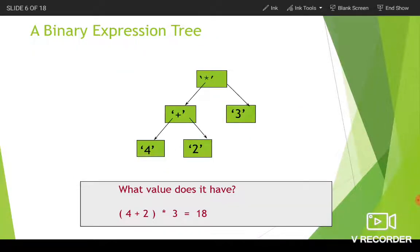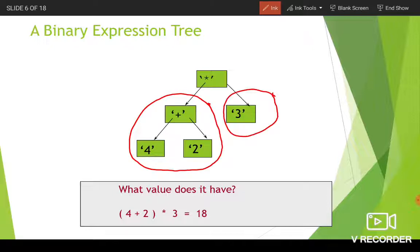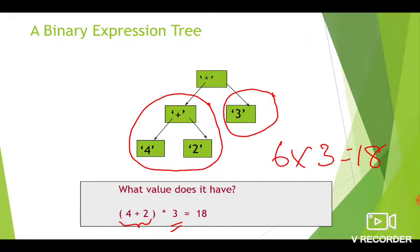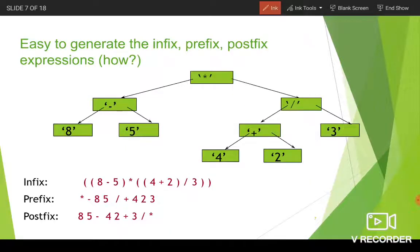Here is another example of a binary expression tree and how it is evaluated. Before evaluating the root, the left subtree must be evaluated first, then the right subtree, then finally the root. The left subtree is 4 plus 2, and the right subtree contains only one operand. So 4 plus 2 is 6, multiplied by 3, and we get the answer as 18.